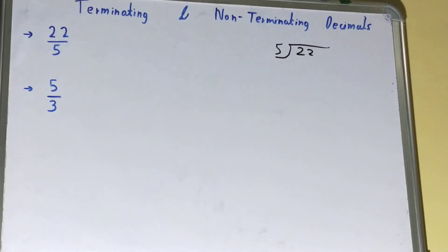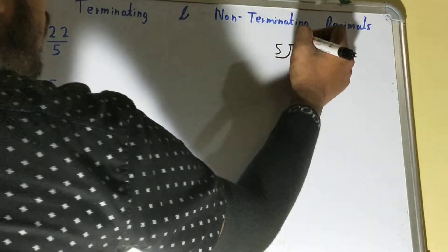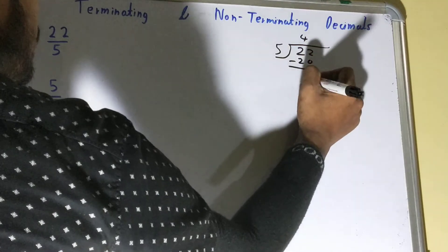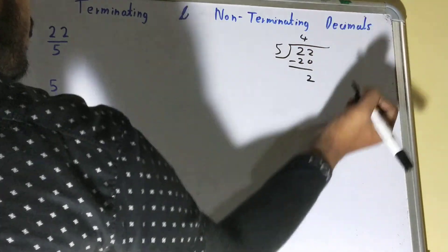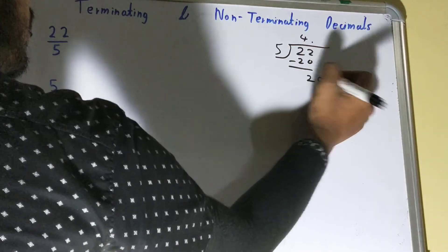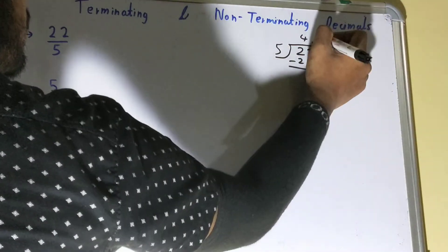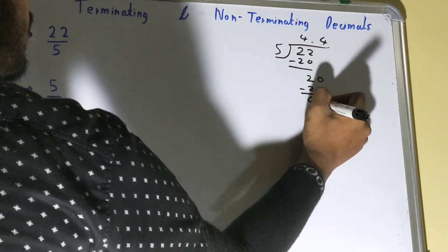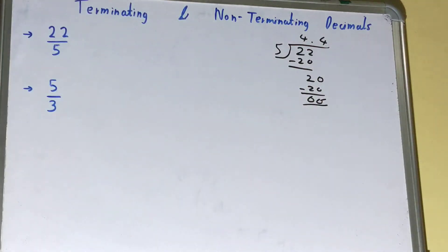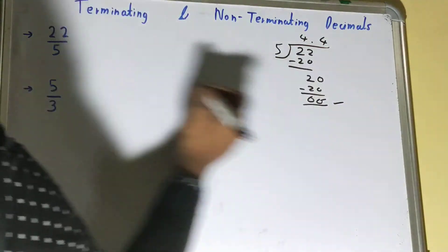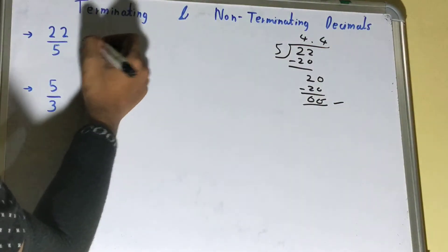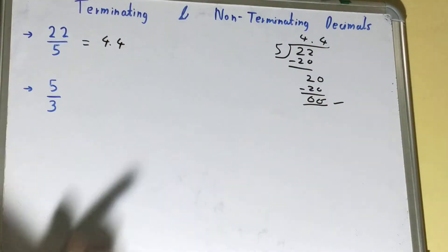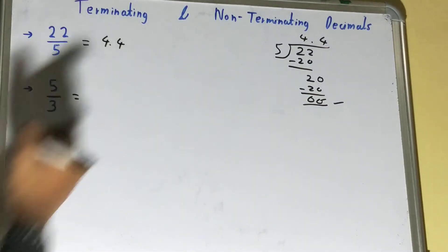I'll write 5 outside and 22 inside. 5 times 4 is 20, so we are left with 2. Now we need to put the decimal — 5 times 4 is 20 — and you can see we get the remainder as 0. So we can write the decimal value as 4.4.